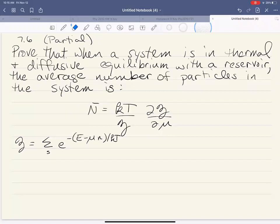k is Boltzmann's constant, T is the temperature, z is our grand partition function, and μ is the chemical potential.